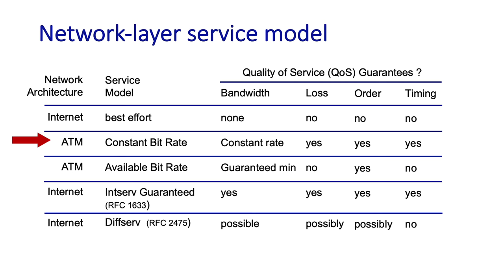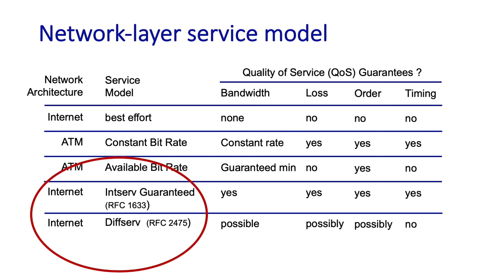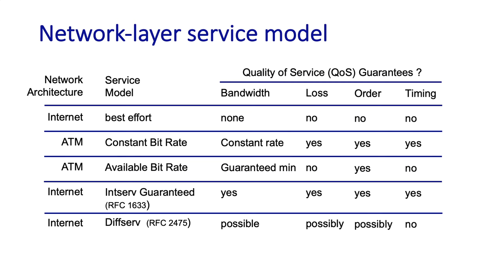There were proposed extensions to the internet's best effort service that would have allowed quality-of-service guarantees to be made in the context of the internet. These were standardized in RFCs and are actually built and deployed in routers today. But in truth, they're not really used. And you might ask yourself: why is that?